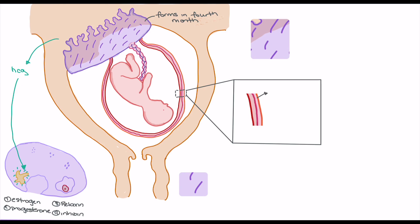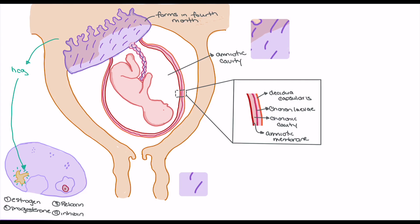Moving to the fetal membranes — what most refer to as the amniotic sac — the outermost layer is the decidua capsularis, the encapsulating layer of endometrium in which the blastocyst embedded itself, now grown outward to encapsulate the fetus. The next layer is the chorionic laeve, made up of cytotrophoblasts that did not form into syncytiotrophoblasts. Below that is the chorionic cavity, a space between the chorionic laeve and the amniotic membrane. The innermost layer is the amniotic membrane, separating the outside of the uterus from the amniotic cavity where the fetus resides. Amniotic fluid, made up essentially of fetal secretions, accumulates rapidly — about one liter fills the amniotic sac at birth.